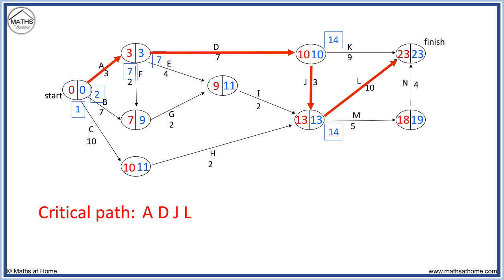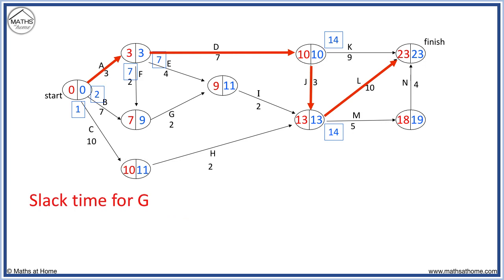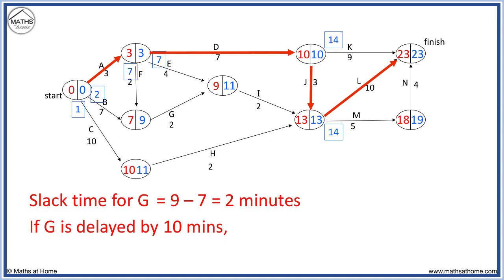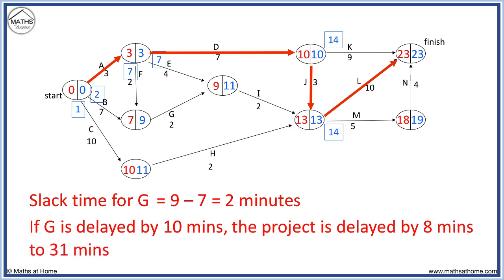To see how delays to other tasks affect the completion time, we look at the slack time. This is equal to the right number subtract the left number in each node. For example, task G is here. We look at the node before task G: we have 9 take away 7 equals 2 minutes. This means that G can be delayed for 2 minutes without delaying the overall completion time. So if G is delayed by 10 minutes, 2 minutes delay is OK, but the remaining 8 minutes will be added on to the project, so it will be completed in 31 minutes.